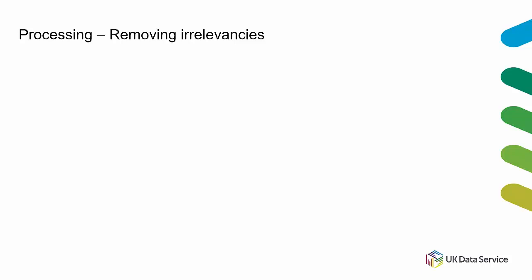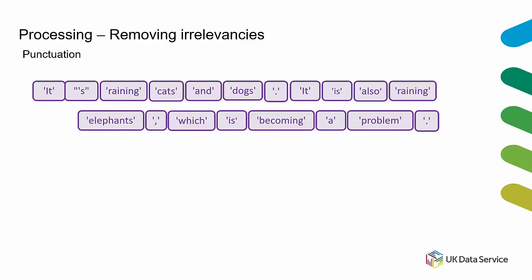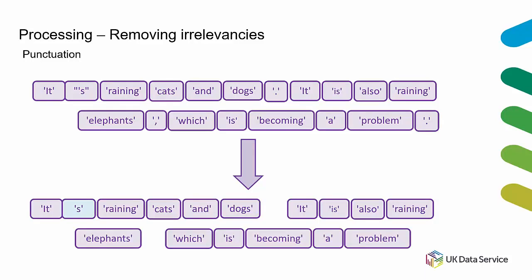Depending on your analysis, you may want to remove things from the text that are irrelevant to your purposes. Punctuation is a good example — when you tokenize by words, punctuation appears as its own token. It has a lot of meaning within sentences, but as a standalone token it carries little meaning, so you probably want to remove these tokens. Removing the apostrophe from possessives is a choice you can make, but it's not required.